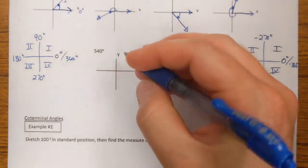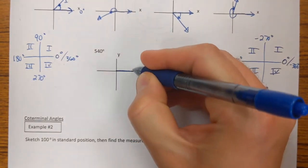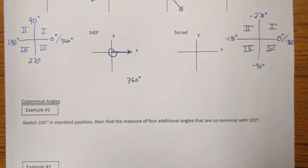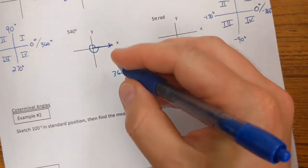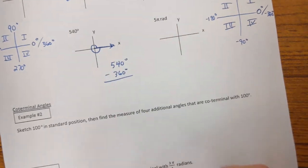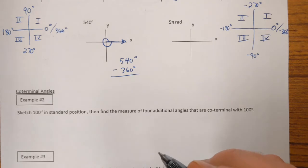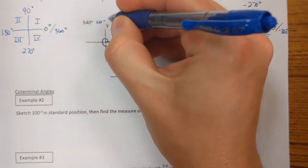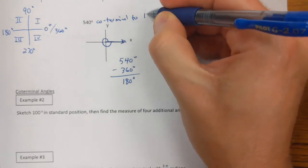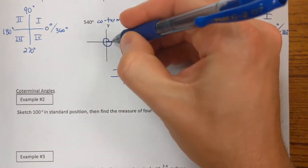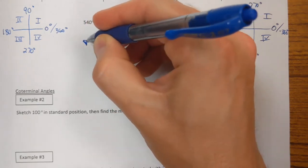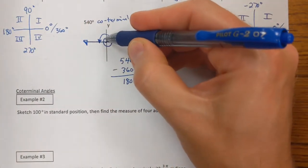Let's do the last two together. For 540 degrees: when I do one full rotation, that's 360 degrees. What I need to find is a coterminal angle to 540 degrees. If I take 540 degrees and subtract 360, I'm left with 180 degrees. This means that 540 degrees is coterminal to 180 degrees, so my terminal side falls exactly where 180 degrees would fall — right along the x-axis. But I had to take an extra spin to get there.